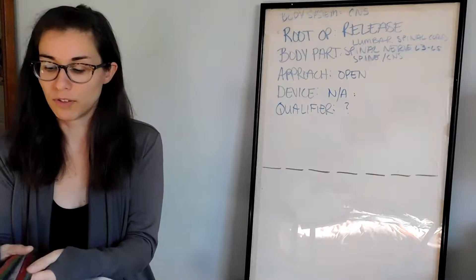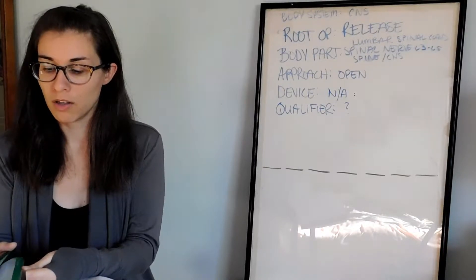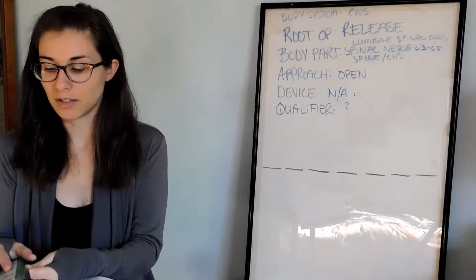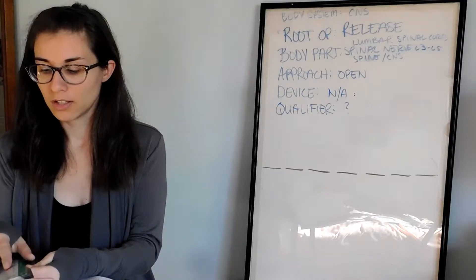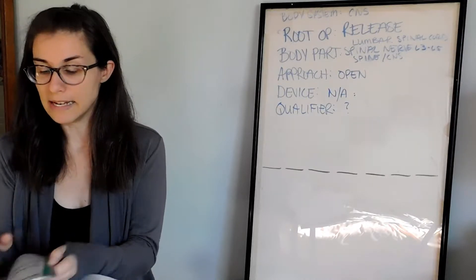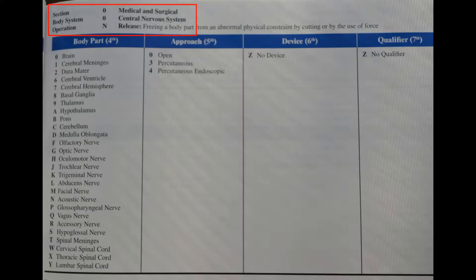So we are going to flip over to our central nervous system body system chapter. It's the very first chapter and it's in green. So our section is an O, medical surgical. Body system, central nervous system, that is an O as well. And our operation slash root operation is an N.